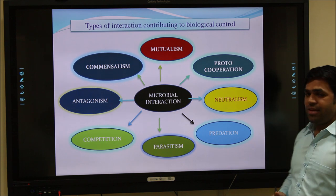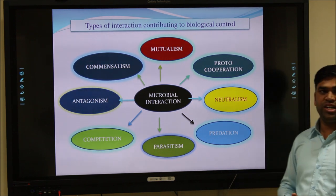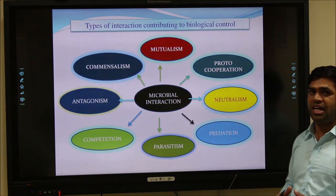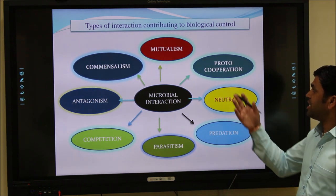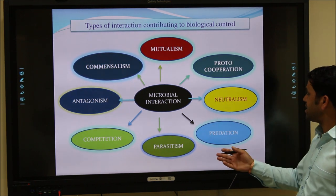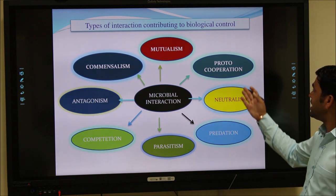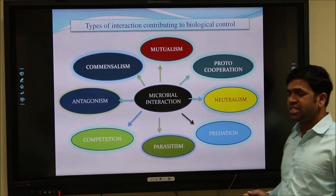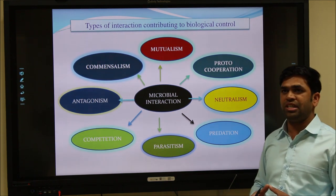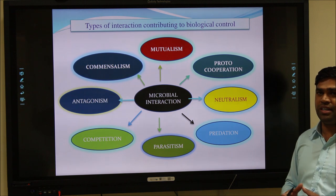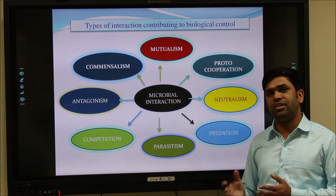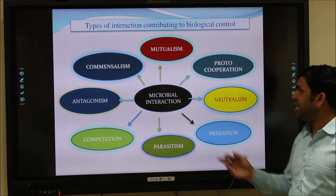Different types of microbial interactions take place in the soil or in the rhizospheric region, including mutualism, commensalism, antagonism, competition, parasitism, predation, neutralism, and proto-cooperation. These are the different interactions which take place among living microbes in the rhizospheric region, or between the biocontrol agents and the plant pathogens. Some interactions are positive and some are negative.